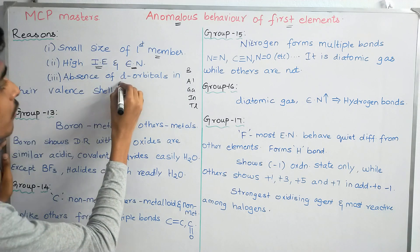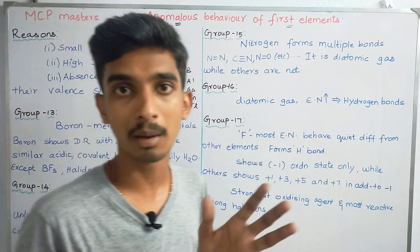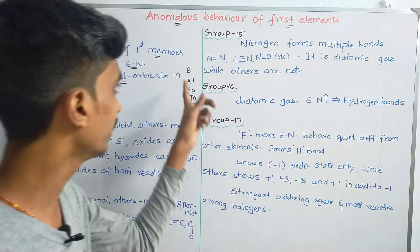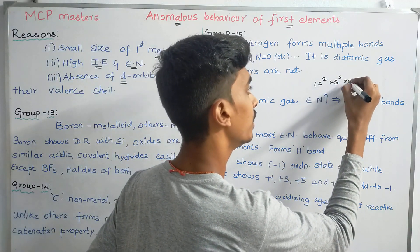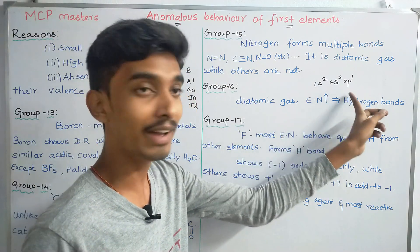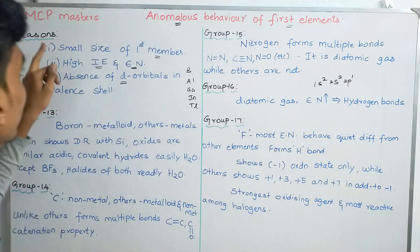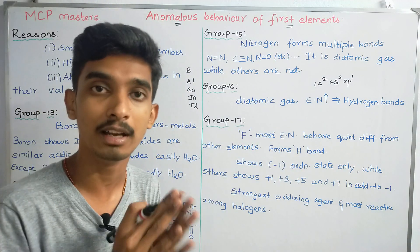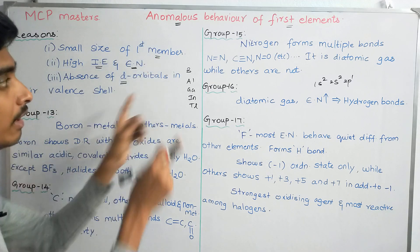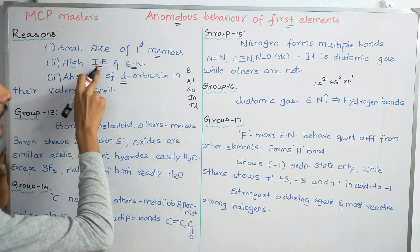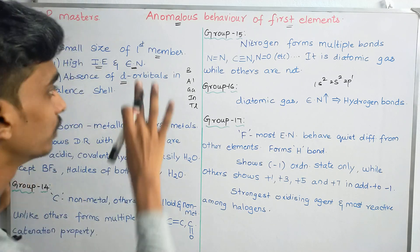The third reason is the absence of d-orbitals in the valence shell. Since the first element has a very small atomic number, there are no d-orbitals available. For example, Boron's electronic configuration is 1s² 2s² 2p¹, so there are no d-orbitals or d-shells, making it quite different from the other elements. These are the three main points.